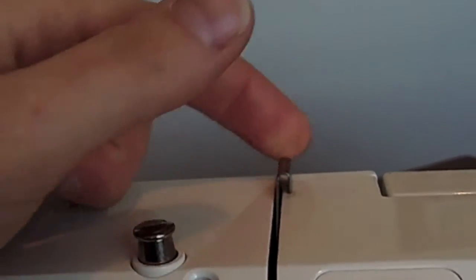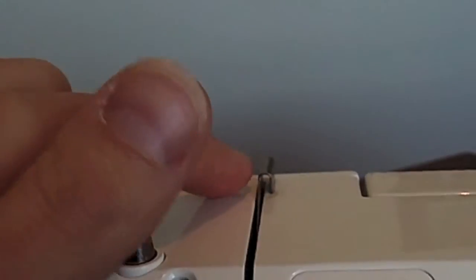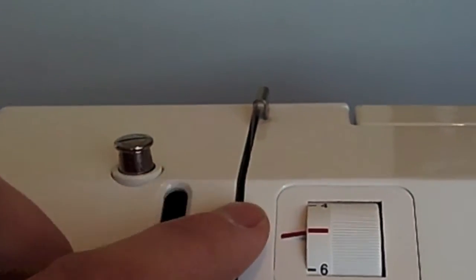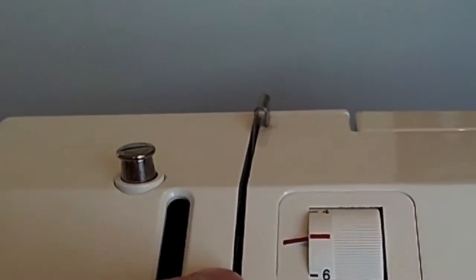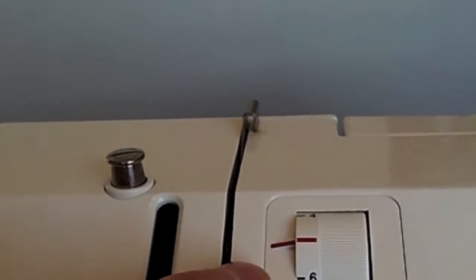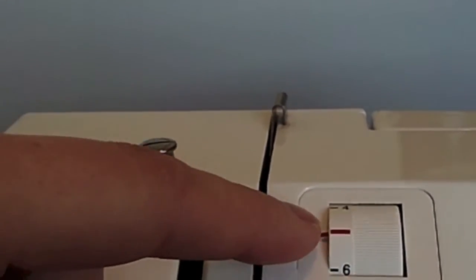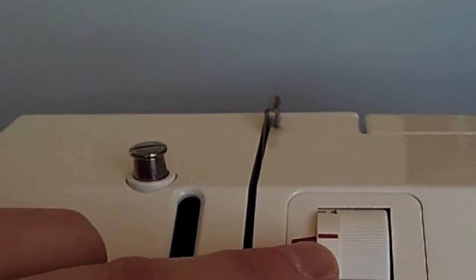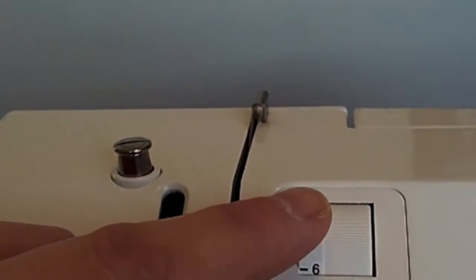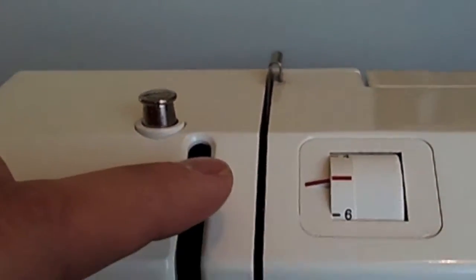Your thread will need to go behind and you bring your thread down through your tension discs which are inside the machine there. You've got your tension dial, so I recommend just making sure it's on a neutral or central position just for starters while you're learning how to sew.